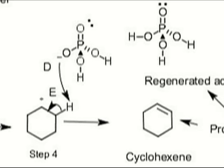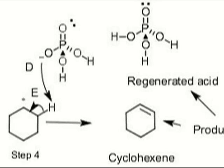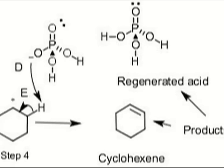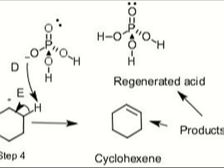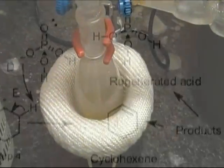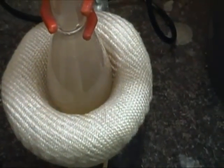Since cyclohexanol is a secondary alcohol, we will need heat to drive the reaction. However, the reason we are distilling instead of just refluxing has to do with the equilibrium of this reaction. Only a small amount of cyclohexene is formed at any moment before it reacts with water and reforms cyclohexanol. Since cyclohexene has a lower boiling point than cyclohexanol, the acid, or water, we can distill and remove it as it forms. This drives the reaction to the product side and will let us convert almost all the alcohol.